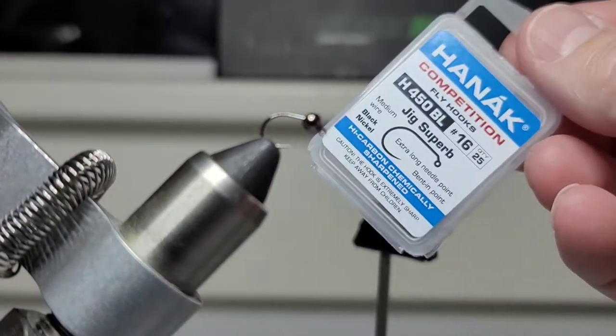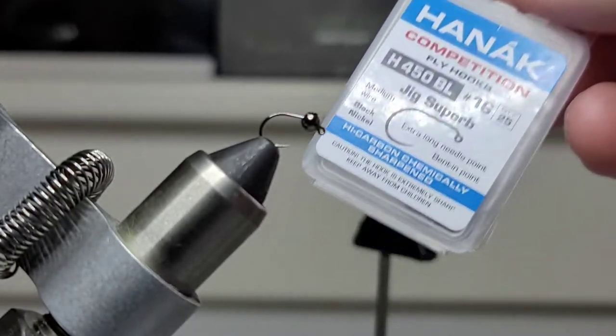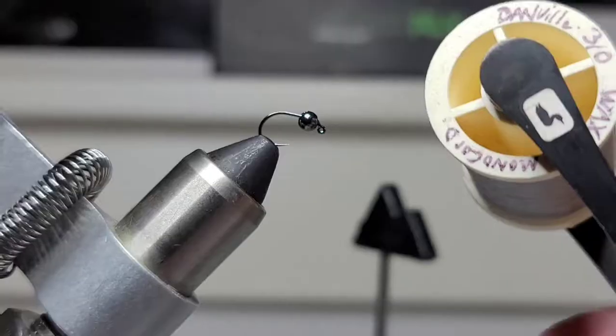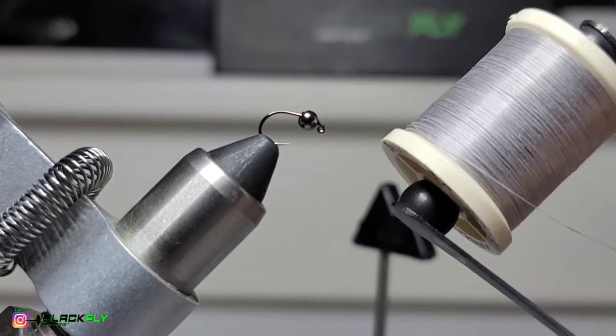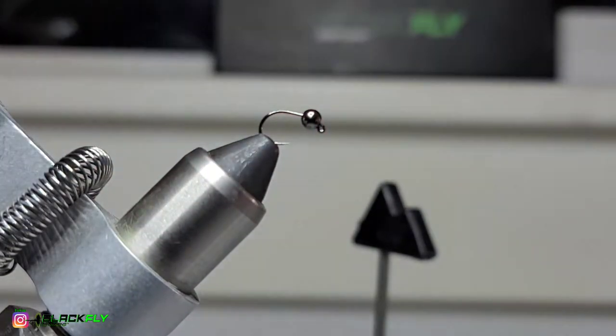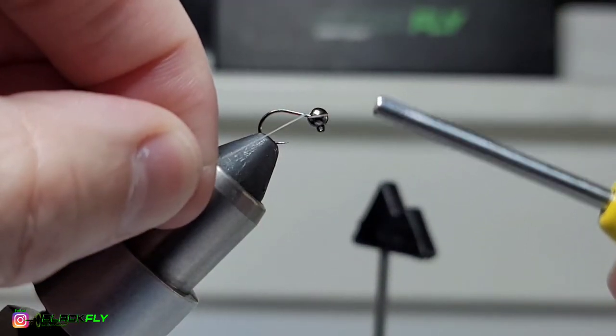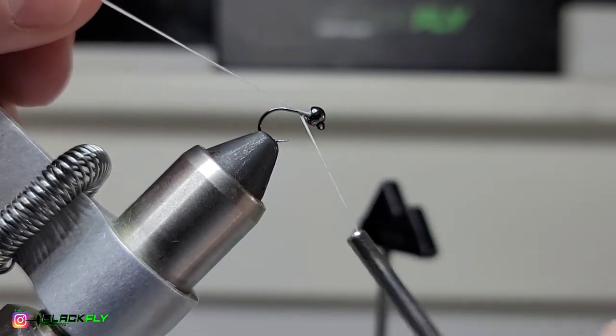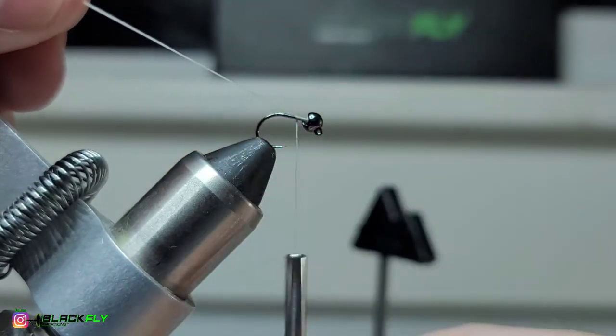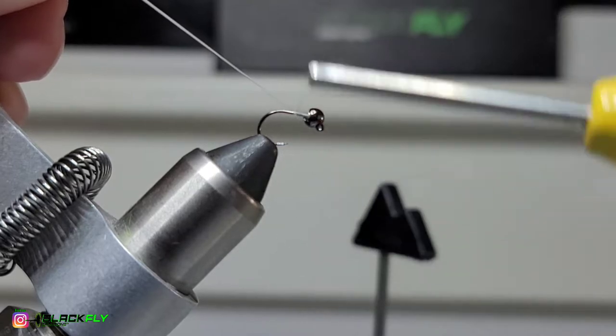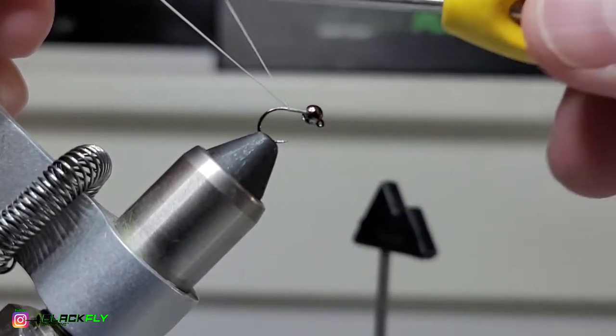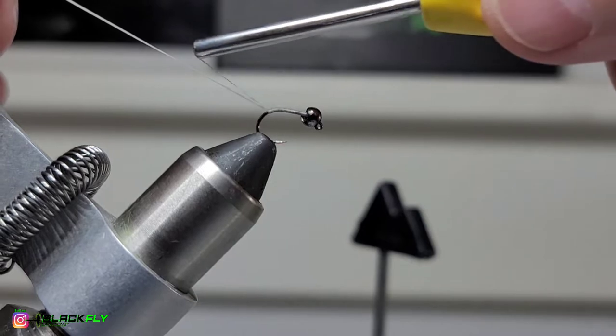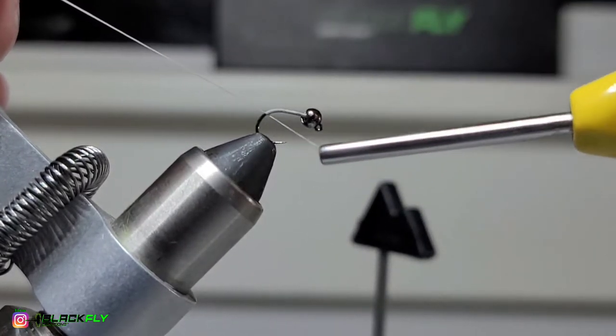Okay, so we're just starting out with the Hanak 450 BL, some number 16 barbless, and then we've just got a 3.2 tungsten slotted bead using the Danville 30 wax monocord in the pearl. You guys know I like that pearl because I like the color thread. And this bug is going to be for getting down - we want this hook to invert. So a little hack for beginners is when you lay down your base thread, hold your thread up at an angle. It will guide that thread down so you can just do touching wraps. And I want the tail of this to shoot down just a little bit.